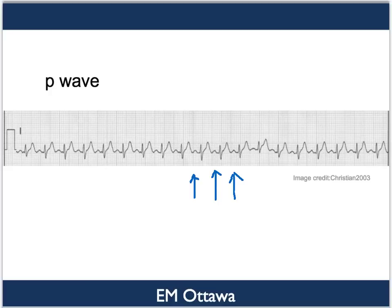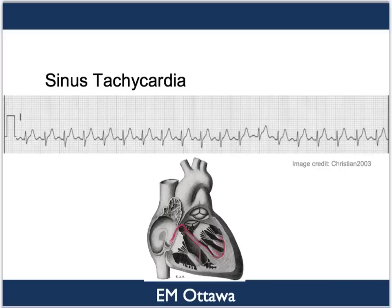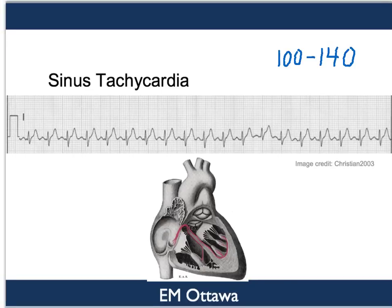Now we will discuss the various tachycardic rhythms with the above classifications in mind: narrow or wide QRS complexes, whether the rhythm is regular or not, and whether there are P waves. The first one is sinus tachycardia, which usually has a rate from 100 to 140. Since the impulse comes from a fast-acting sinus node, it will be narrow, it should be regular, and you should also see P waves.